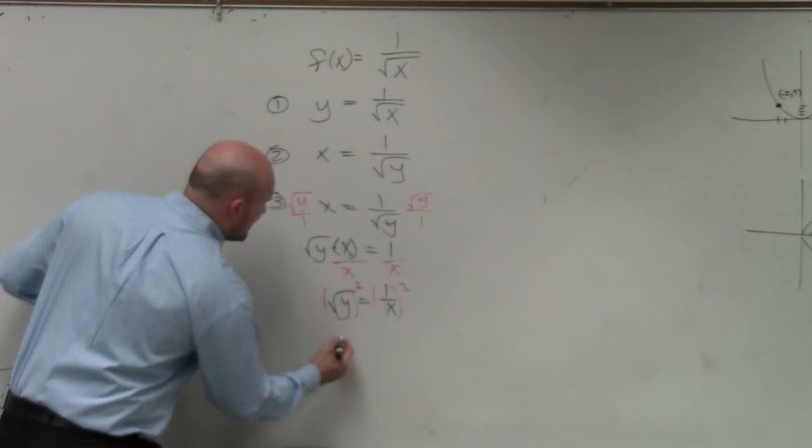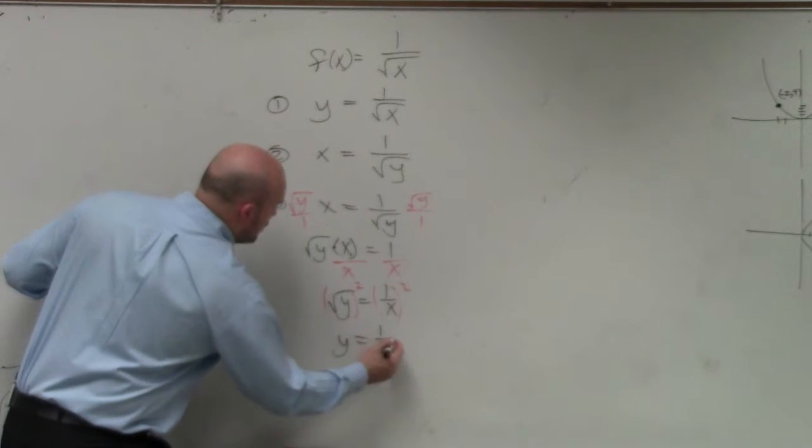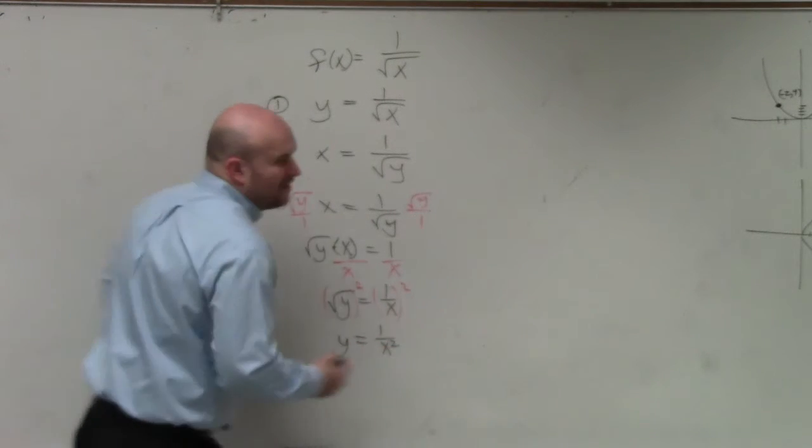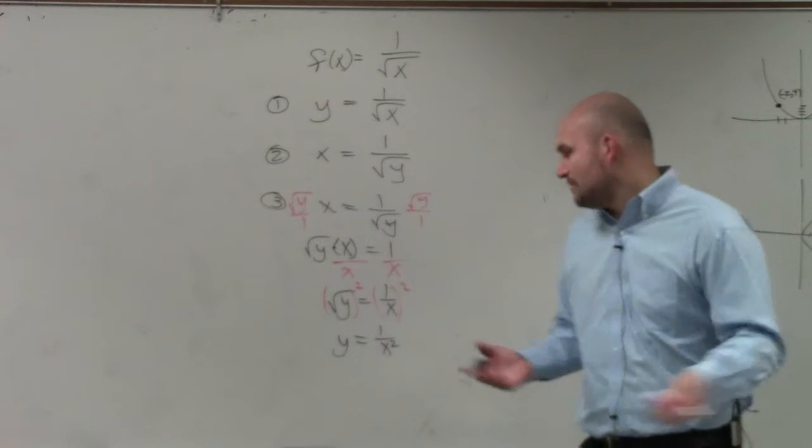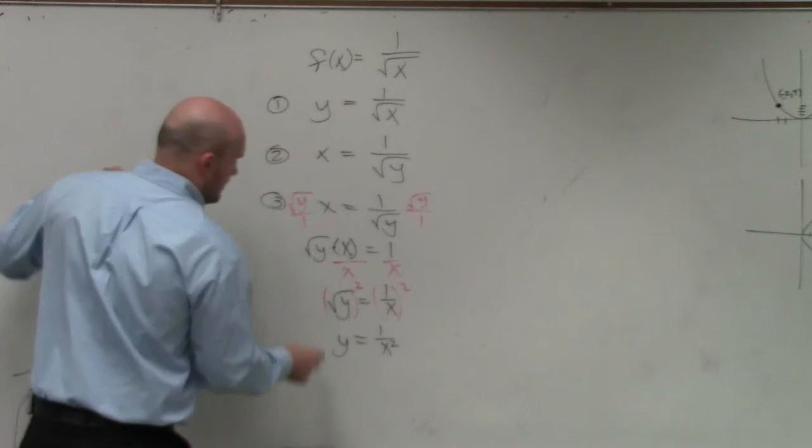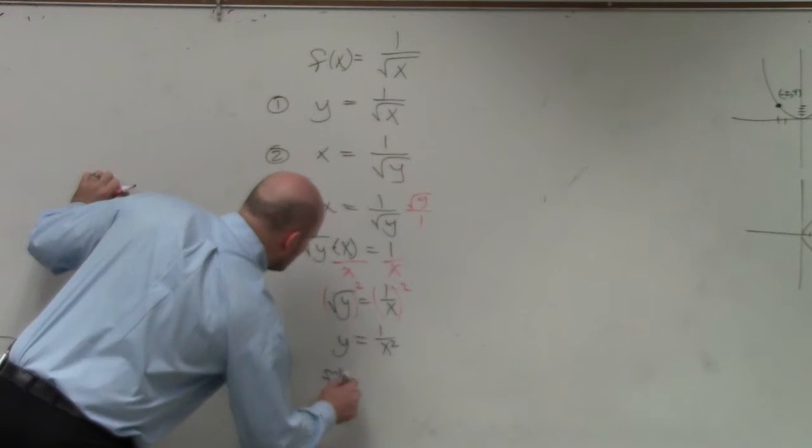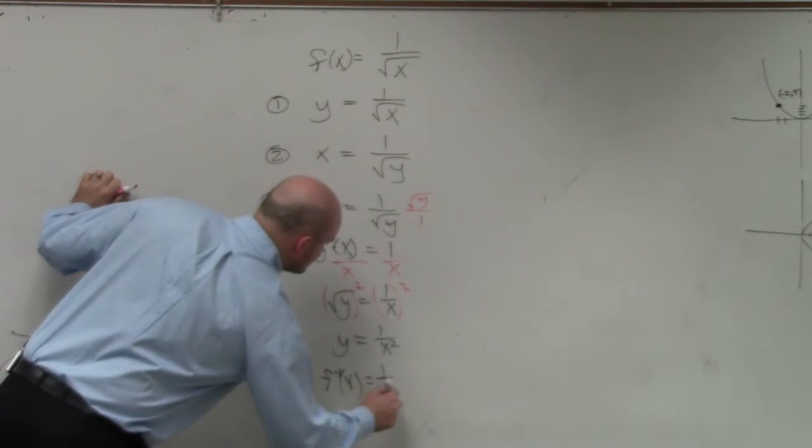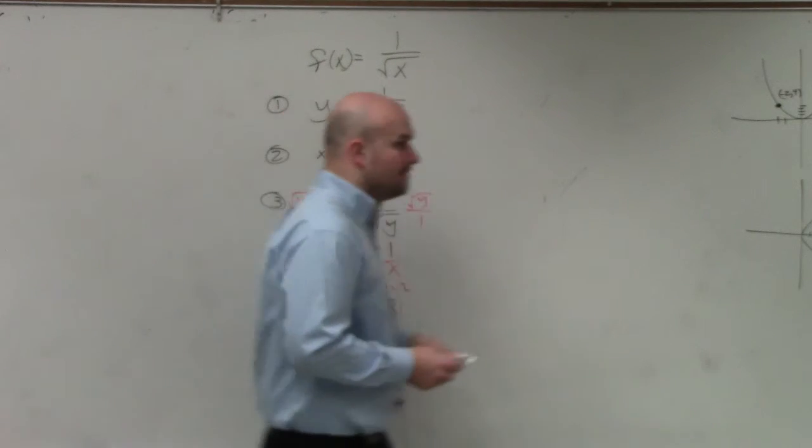So therefore, my final answer is y equals 1 over x squared. Because 1 squared is 1, and x squared would obviously be x squared. And then step four is I simply go ahead and rewrite this, replacing my y with an f inverse. And that's it.